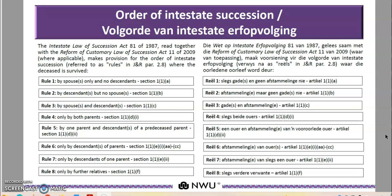In the case of someone passing away with no will as to how their property is going to devolve, the law that is applicable is the law of intestate succession. Intestate succession is basically regulated by the Intestate Law of Succession Act 81 of 1987, which is read together with the Reform of Customary Law of Succession Act of 2009. This makes provision for the order of estate intestate succession.